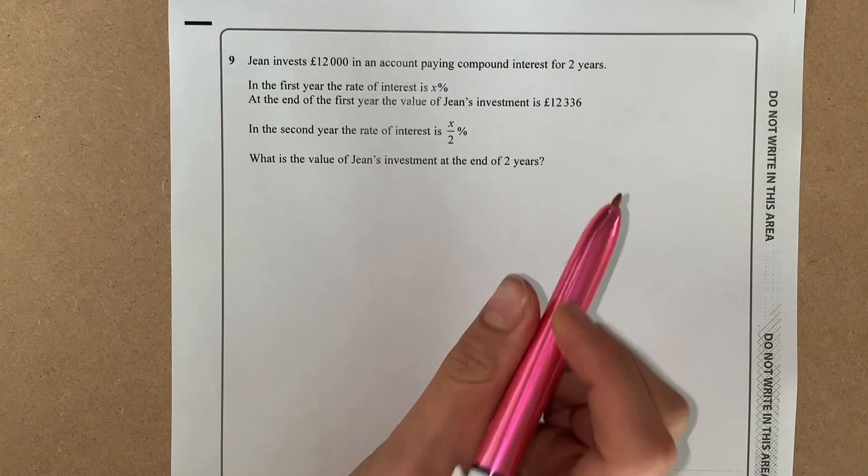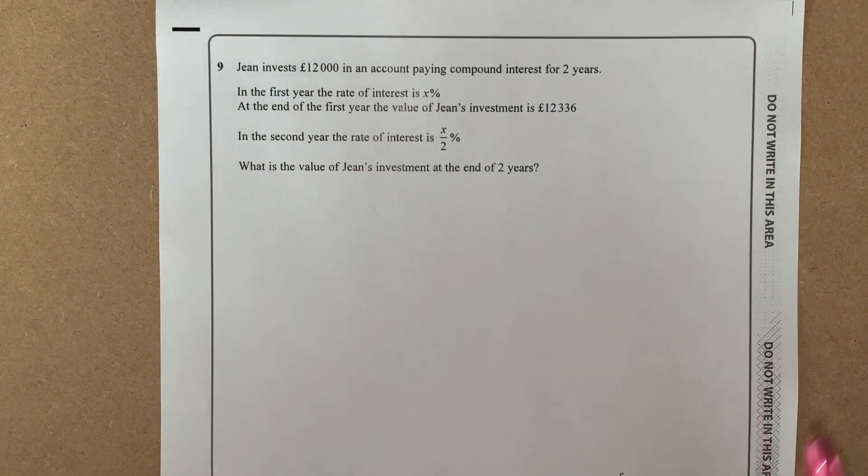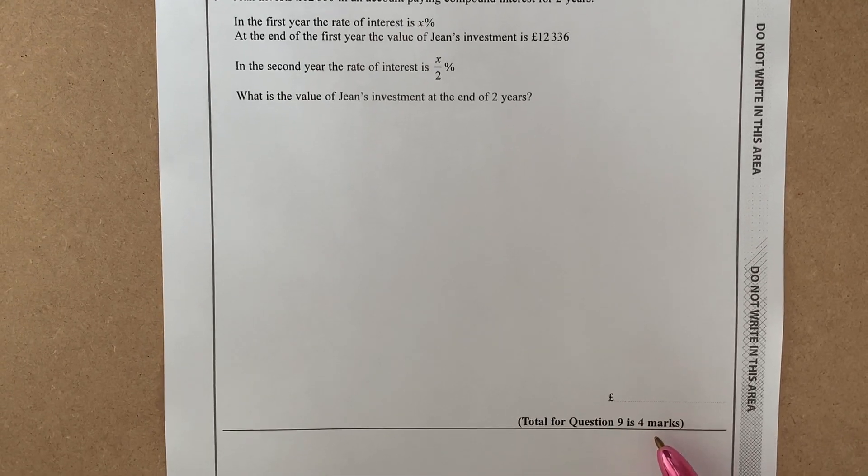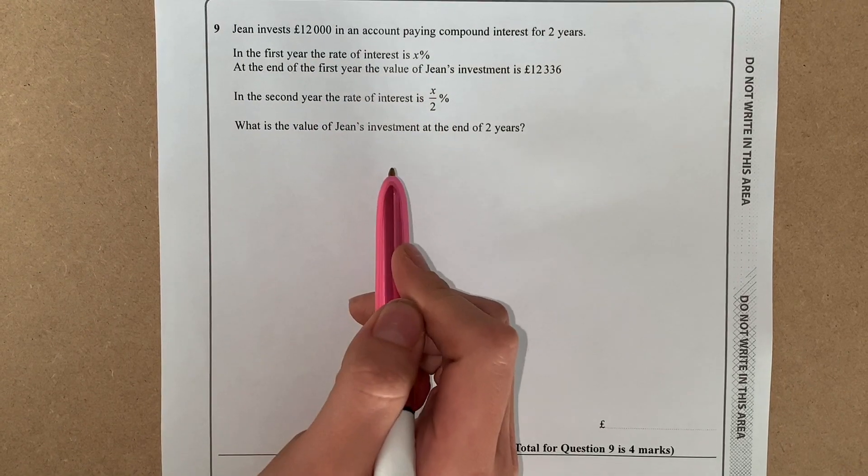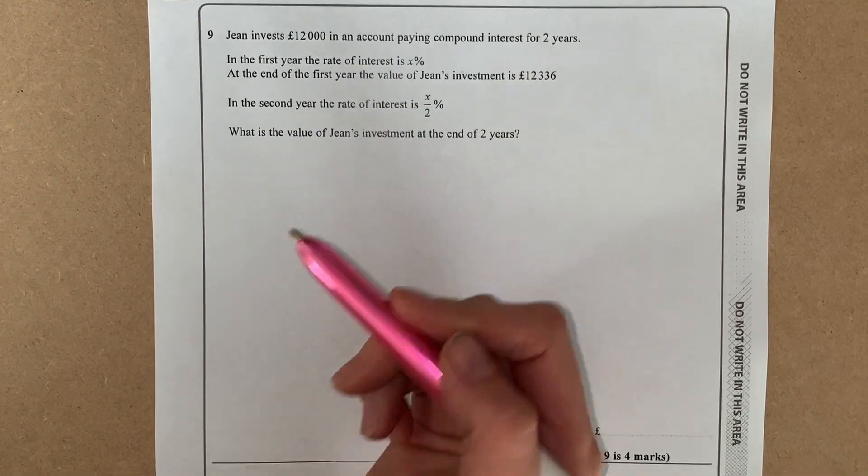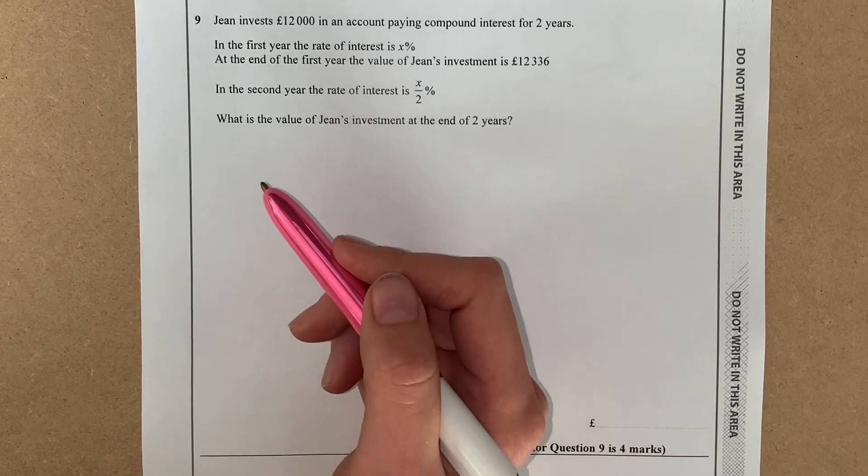Okay, so this is a question on compound interest. We've picked this one out because it's four marks, so it's a big amount of marks for a question, and there's quite a lot of places in there that people drop marks for quite simple mistakes that I want you to look out for.